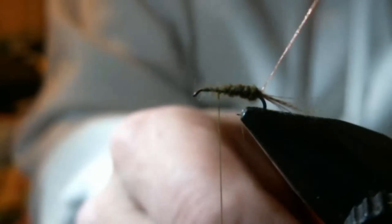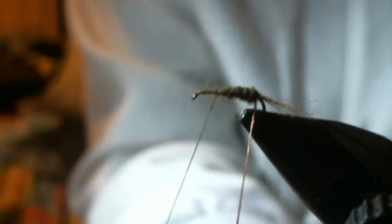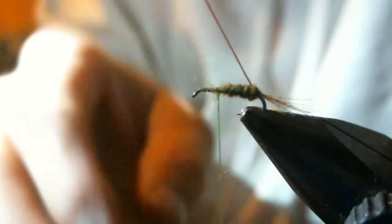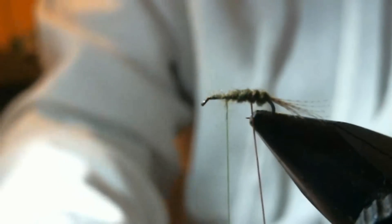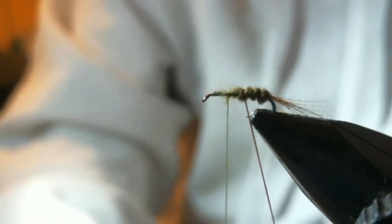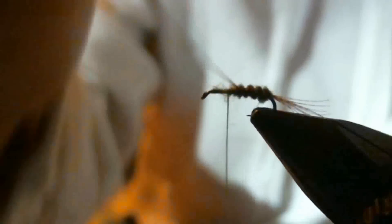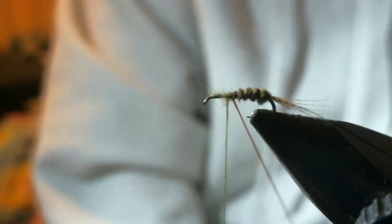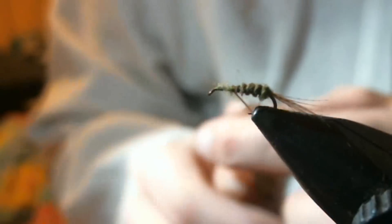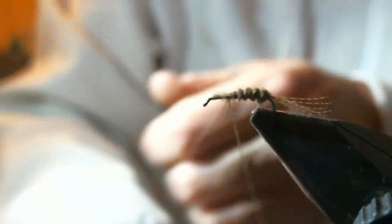And you get to about that point in the hook and you want to take your thread. I'm going to cut a little too much off but keep it fine, and make your wraps as easily as possible so it looks like a ribbing of a fly. Get to that point, tie it off.